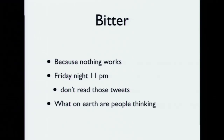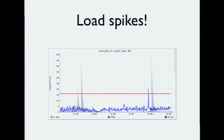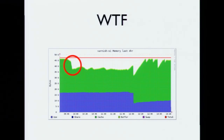Why am I bitter? Because nothing fucking works. We have a stack that's built on shit. I'll take you very quickly through an issue we had at Fastly. This is one of our graphs for load on one machine. You see the load spikes — that's a really bad load spike. You look at the memory usage and go, what the fuck? It just evicted 10 gigs from the page cache. Why would it do that? Welcome to Linux.